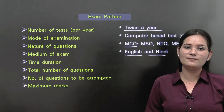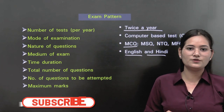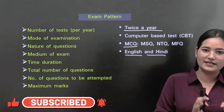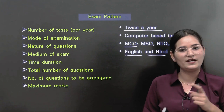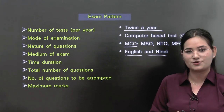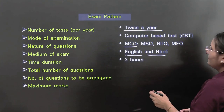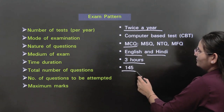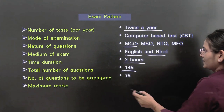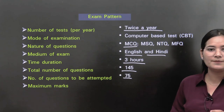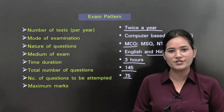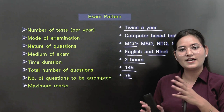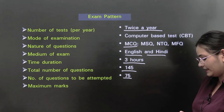When filling the exam form, if you choose Hindi medium, you will find your examination in both Hindi and English. If you choose only English medium, the examination will be in English only. Total time duration is 3 hours. Number of questions is 145, out of which you need to attempt 75. Maximum marks are 200.